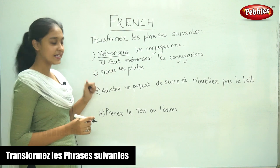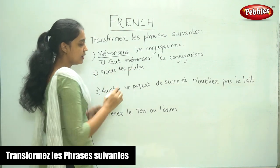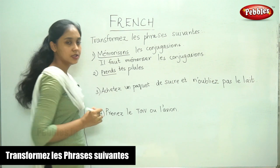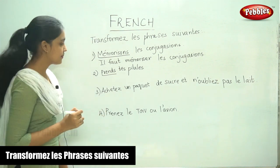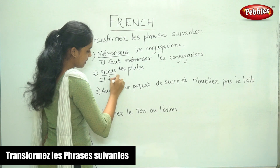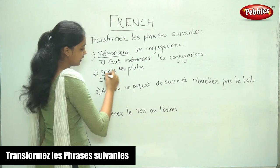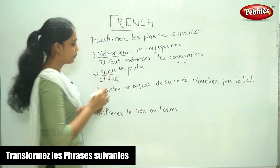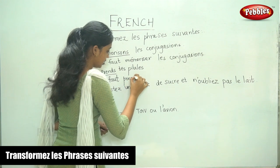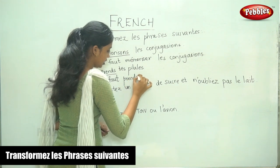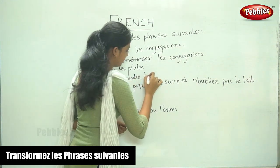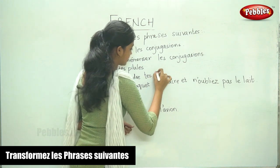The next sentence: Prendre des pilules. Now, the verb is prendre. Il faut plus the infinitive, which will be Prendre. Il faut Prendre. And you have to complete the sentence.